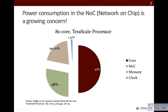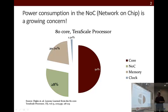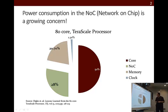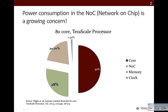Power consumption is a growing concern in modern CMOS process technology. This diagram shows a breakdown of that power consumption for the Intel 80-core terascale processor. A very substantial chunk — the second largest after the cores themselves — is consumed in the network on chip, or the interconnect between the processors. This is the portion of the power consumption problem that we're trying to address in this work.